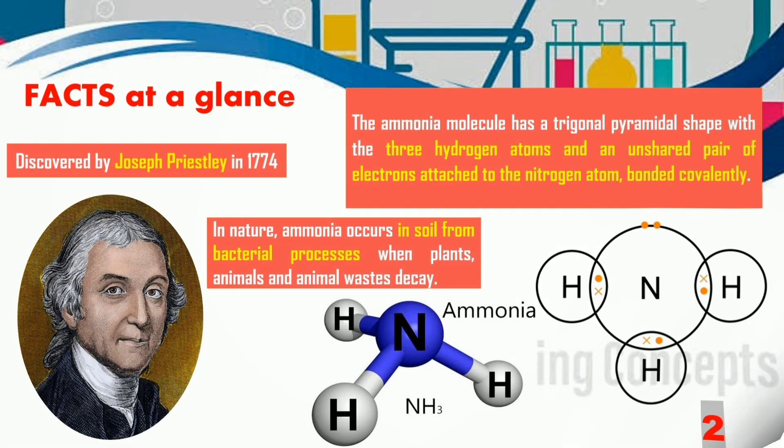The ammonia molecule has a trigonal pyramidal shape, and it has three hydrogen atoms and one nitrogen atom bonded covalently.